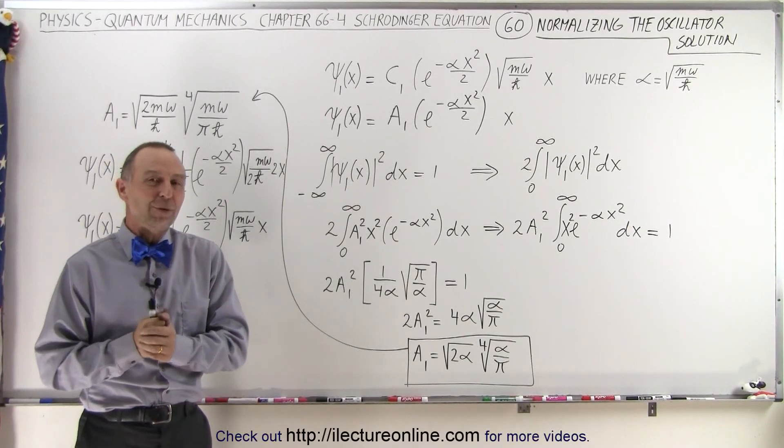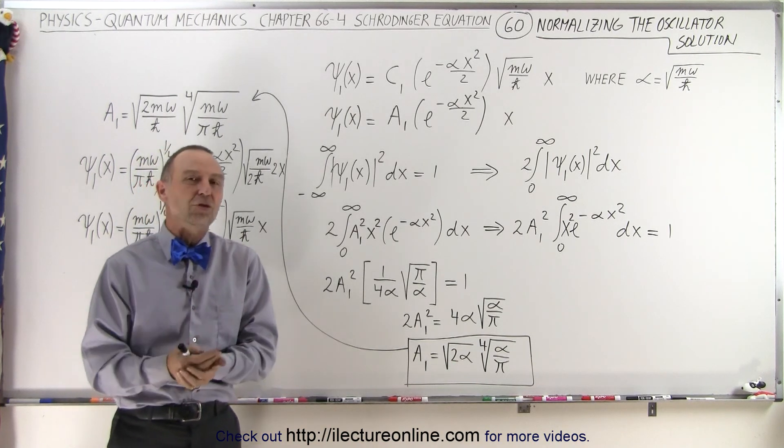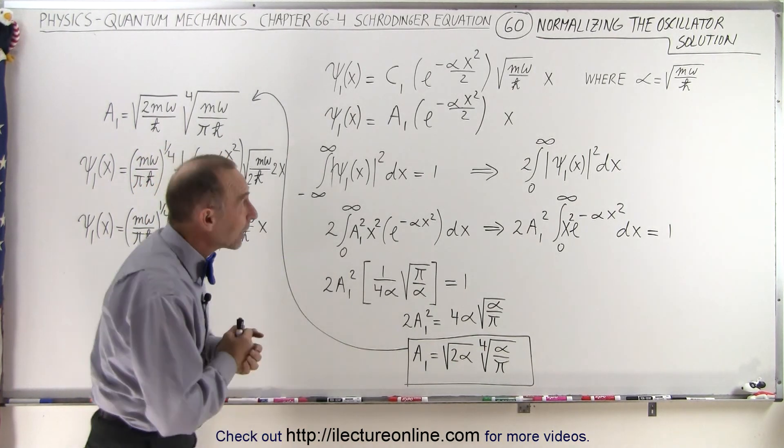Welcome to Electron Line. We're finally ready to normalize our function, the solution to the Schrodinger equation that describes the quantum mechanic oscillator.